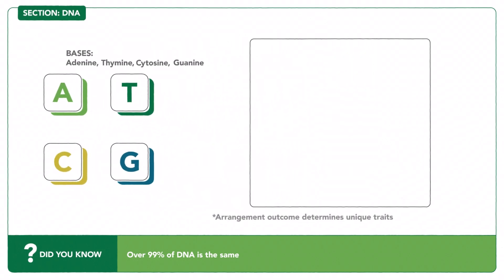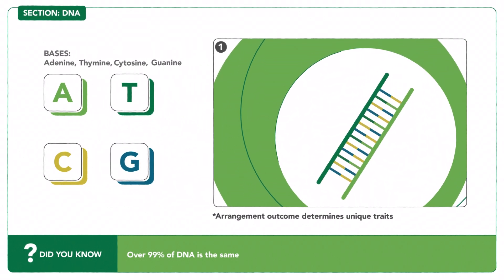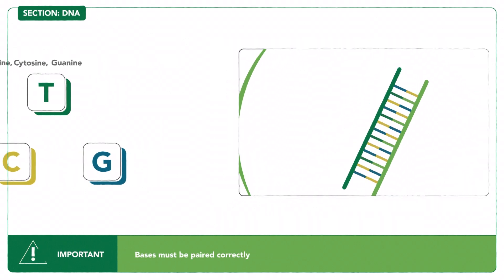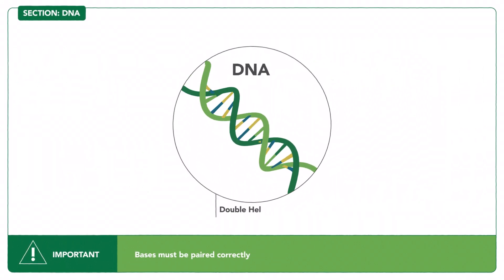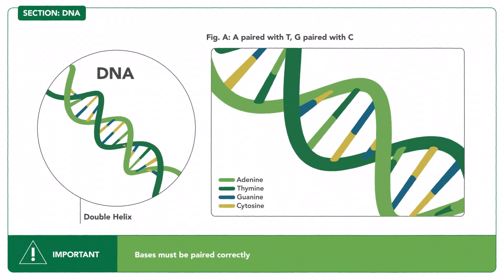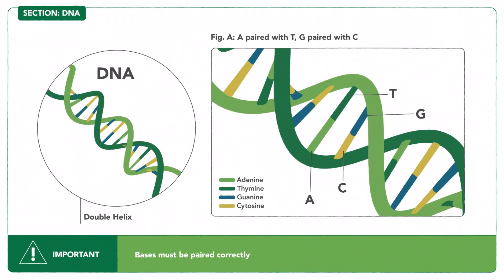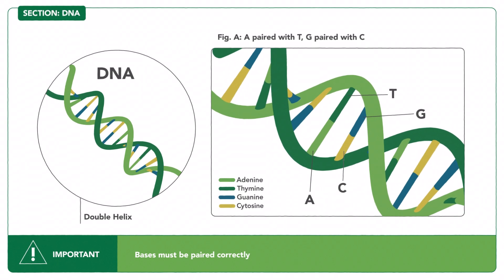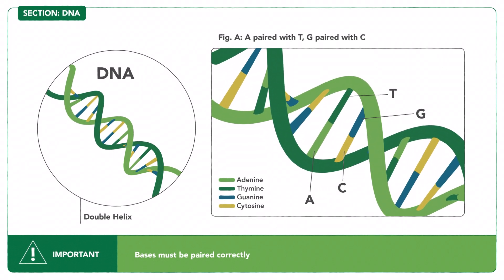How they're arranged determines unique traits, like hair color and height. Arrange the DNA like a spiral staircase, a double helix. For each stair, connect the bases as shown in figure A. The order of the bases creates instructions to build the proteins we need to function.